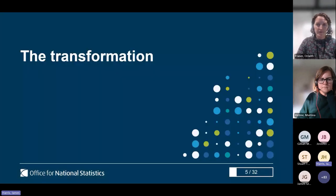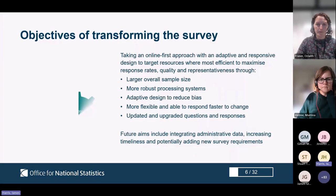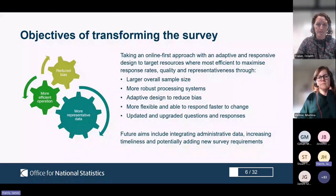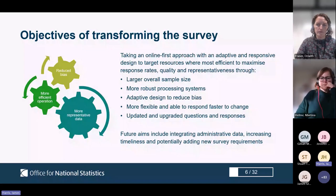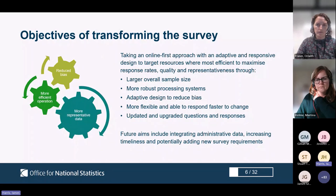Thinking about the transformation objectives: we are taking an online-first approach, so rather than the old survey being face-to-face first, it's now online first with a new adaptive and responsive design. We are targeting our activities, resources, and fieldwork capacity in the most efficient way to maximise the number of responses we get - but not just the number, also the representativeness and quality of those responses. This includes a larger overall sample size: the wave one of the transformed survey is far larger than the current wave one of the current LFS - I think it's seven times the size.